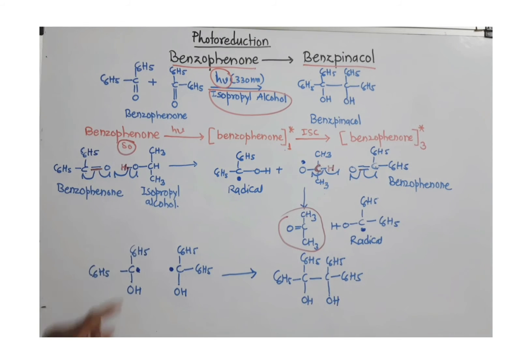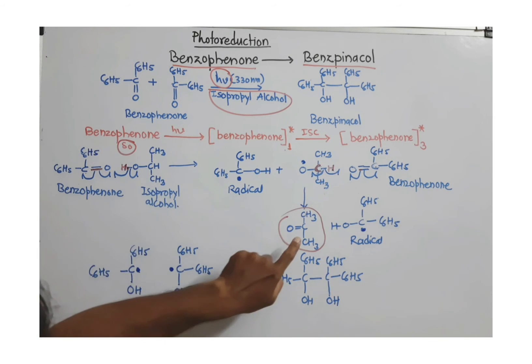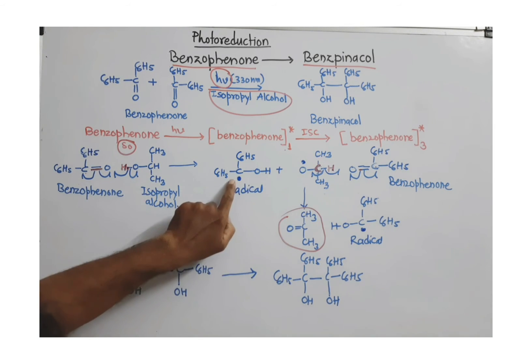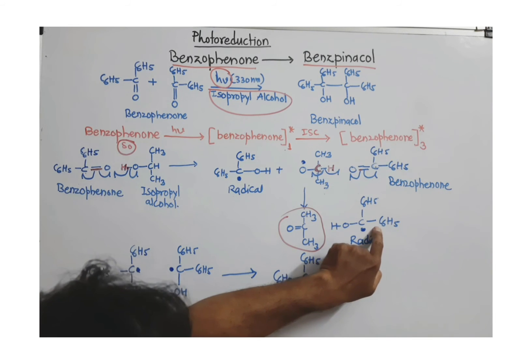So in this way, this isopropyl alcohol is converted to the ketone. That means oxidation of isopropyl alcohol is taking place and we get these two similar radicals.